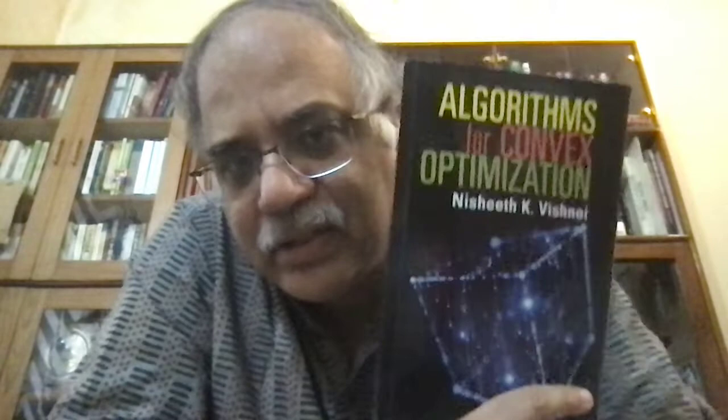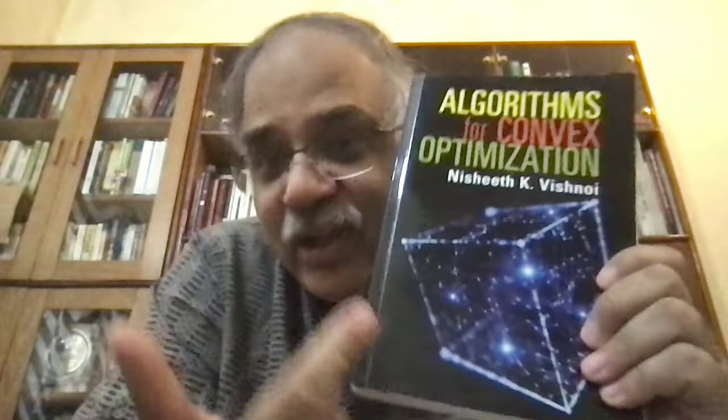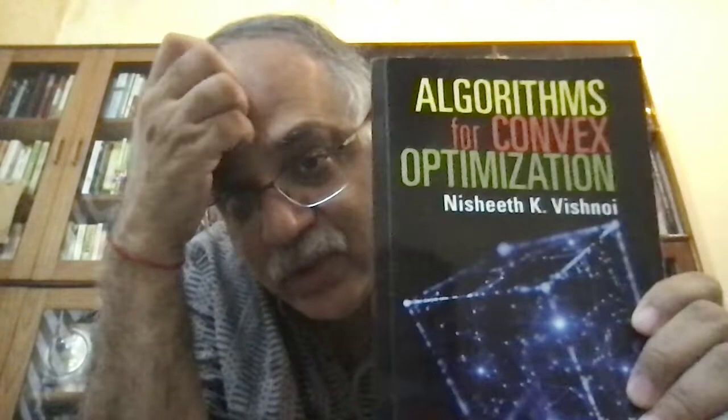The first book is 'Algorithms for Convex Optimization,' a book necessary for anybody doing research in optimization and computer science, especially machine learning. It is written by Nisheeth K. Vishnoi. I happen to know him personally — he is actually a native of Kanpur. I visited his department when he was in Lausanne near Geneva at EPFL. He does quite brave research and has a lot of interest in the complexity analysis of optimization algorithms.